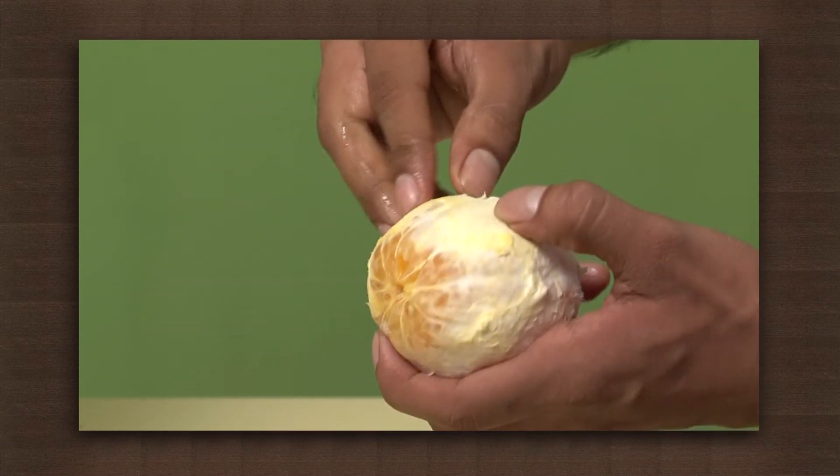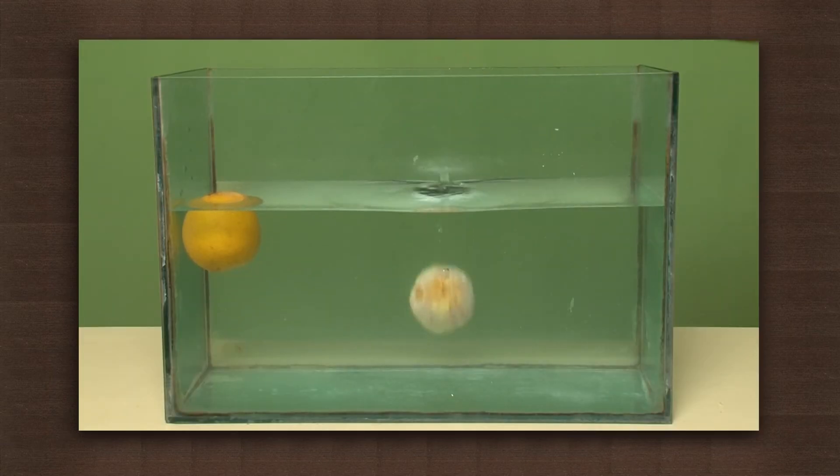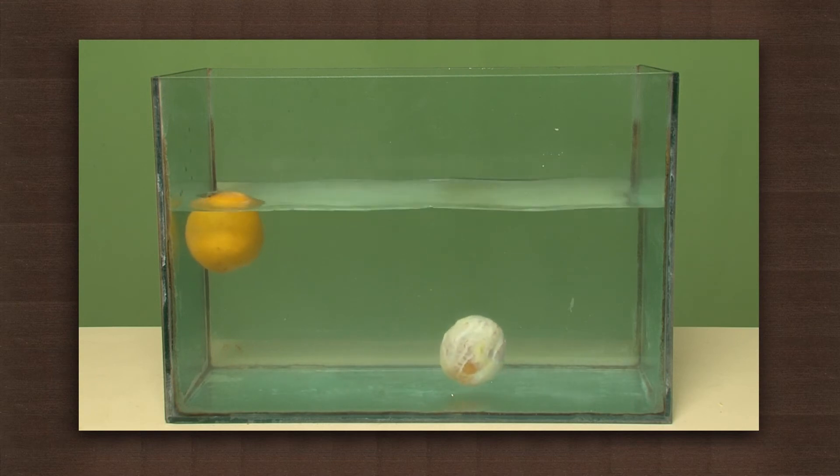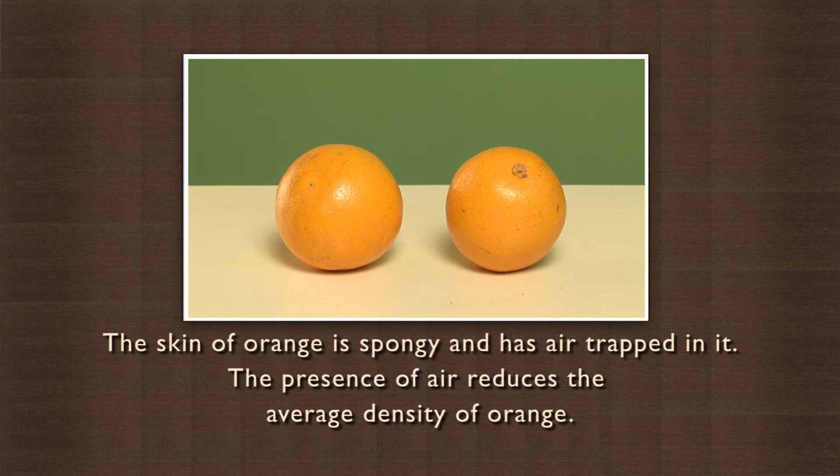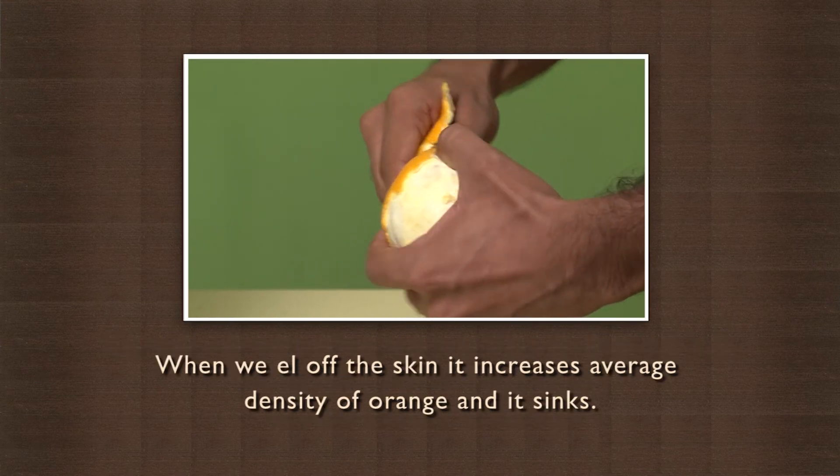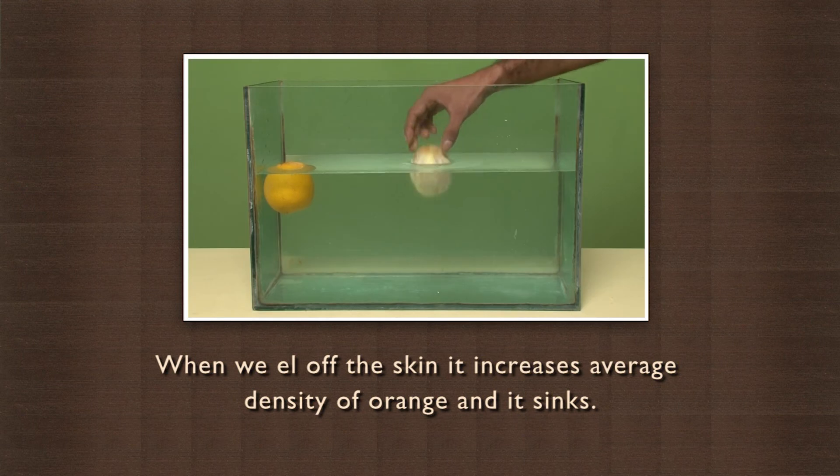You will see a very peculiar property. Observe. It sinks in water. This is because the skin of orange is spongy and has air trapped in it. The presence of air reduces the average density of orange. When we peel off the skin, it increases average density of orange and it sinks.